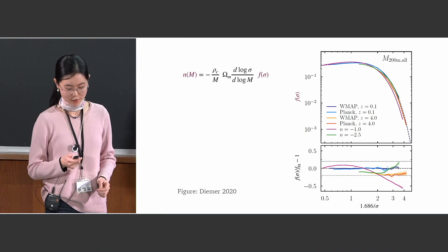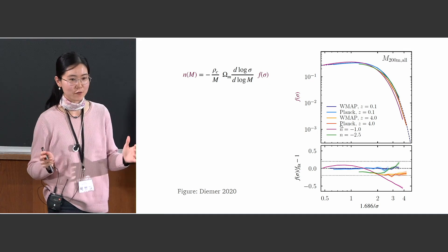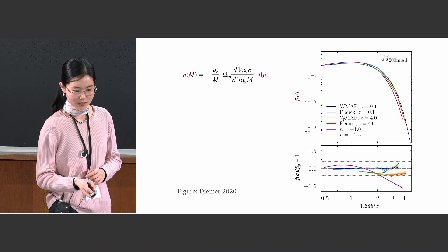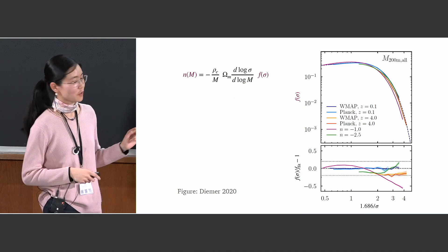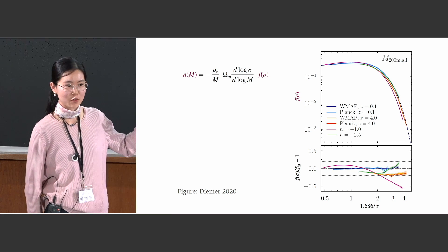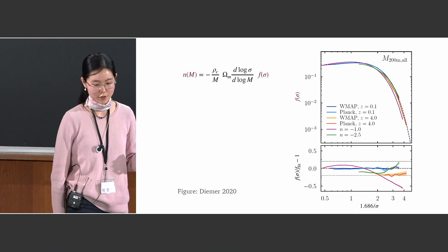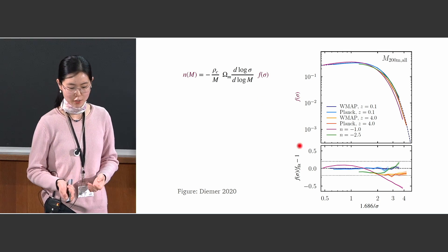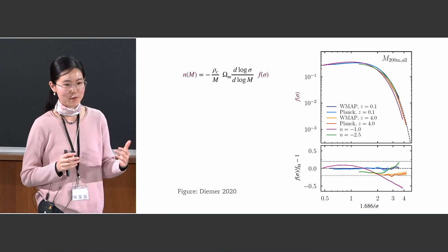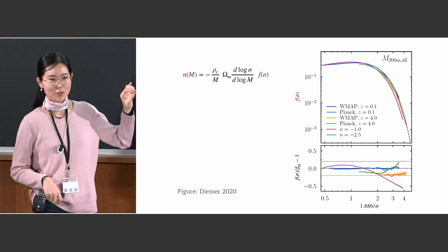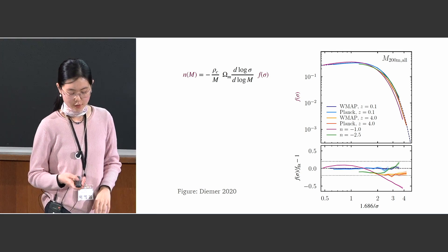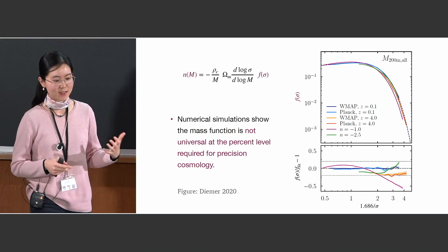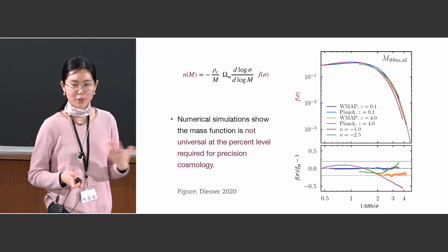Mathematically, we can write the mass function where the f(sigma) term on the right captures all of the information about the shape of the halo mass function, and then there's a term in front that maps this from a function of sigma to a function of halo mass. The top right plot shows f(sigma) from simulations run with different cosmological parameters and at different redshifts. If the halo mass function were universal, the shape of f(sigma) should be the same regardless of cosmology — all different color lines should lie on top of each other with no residuals. But the simulations show that this is not the case.